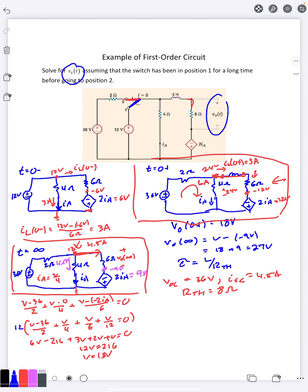So that means my tau, which is L over R is 3 Henry's over 8 ohms. That's 0.375 seconds.